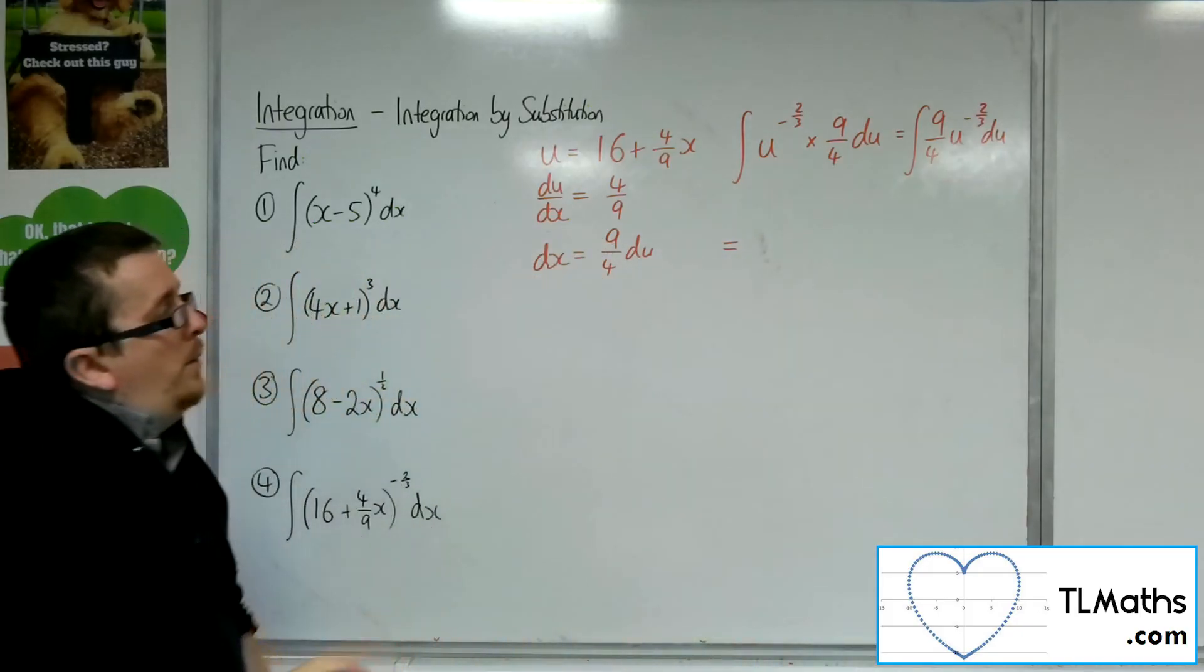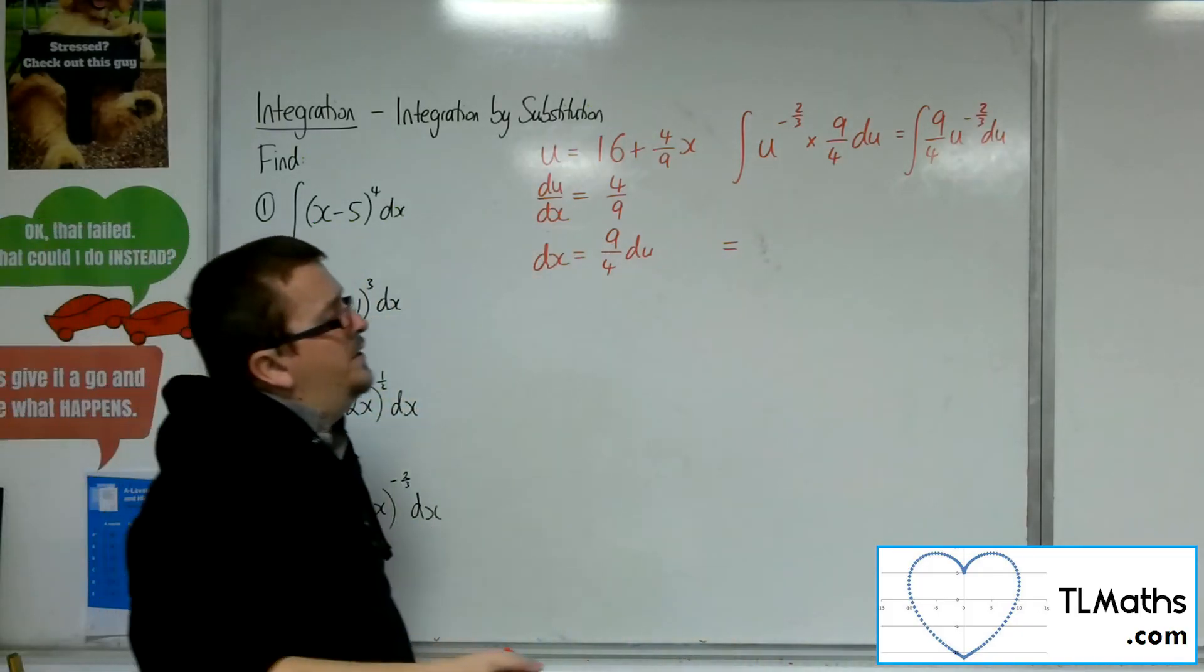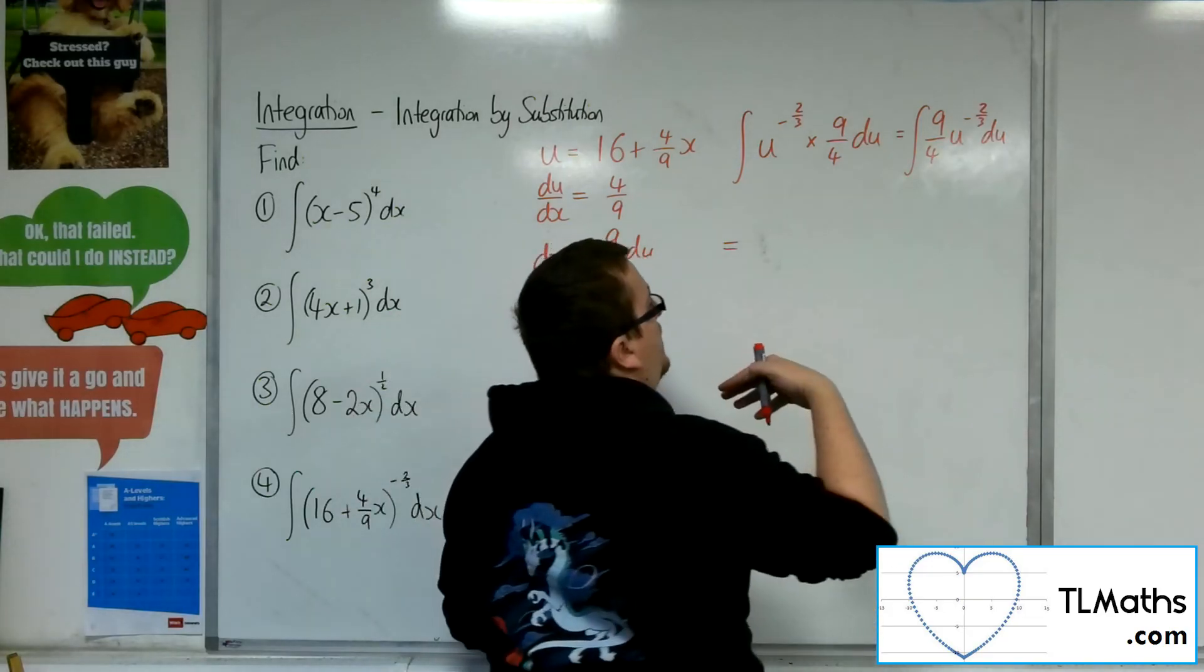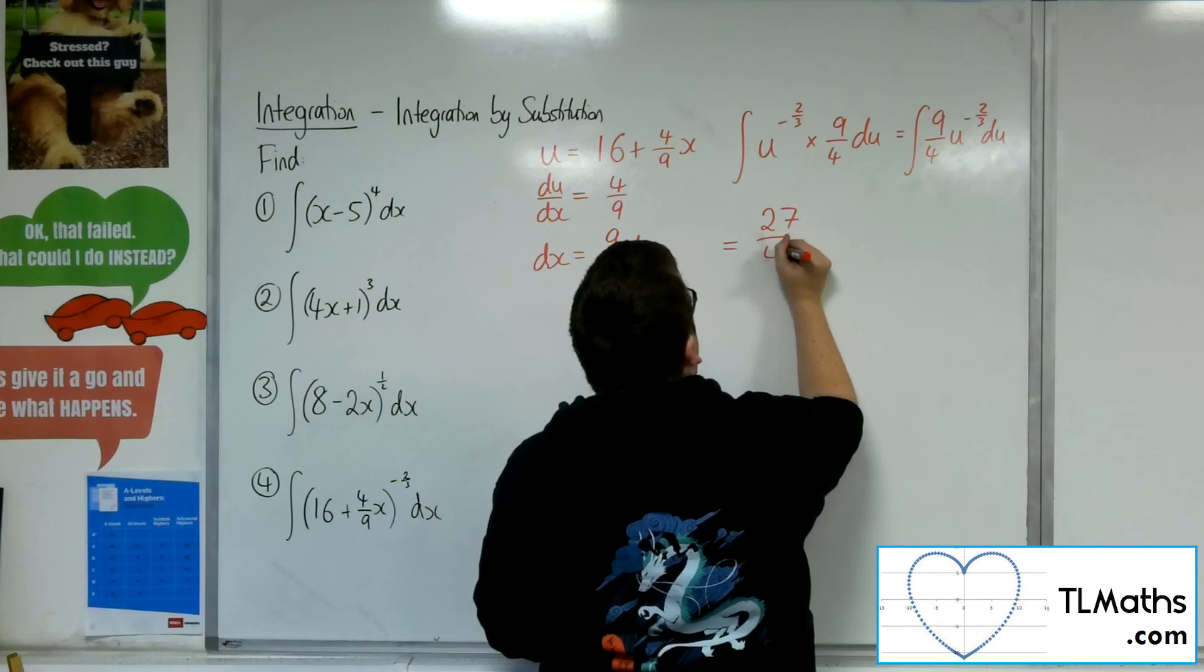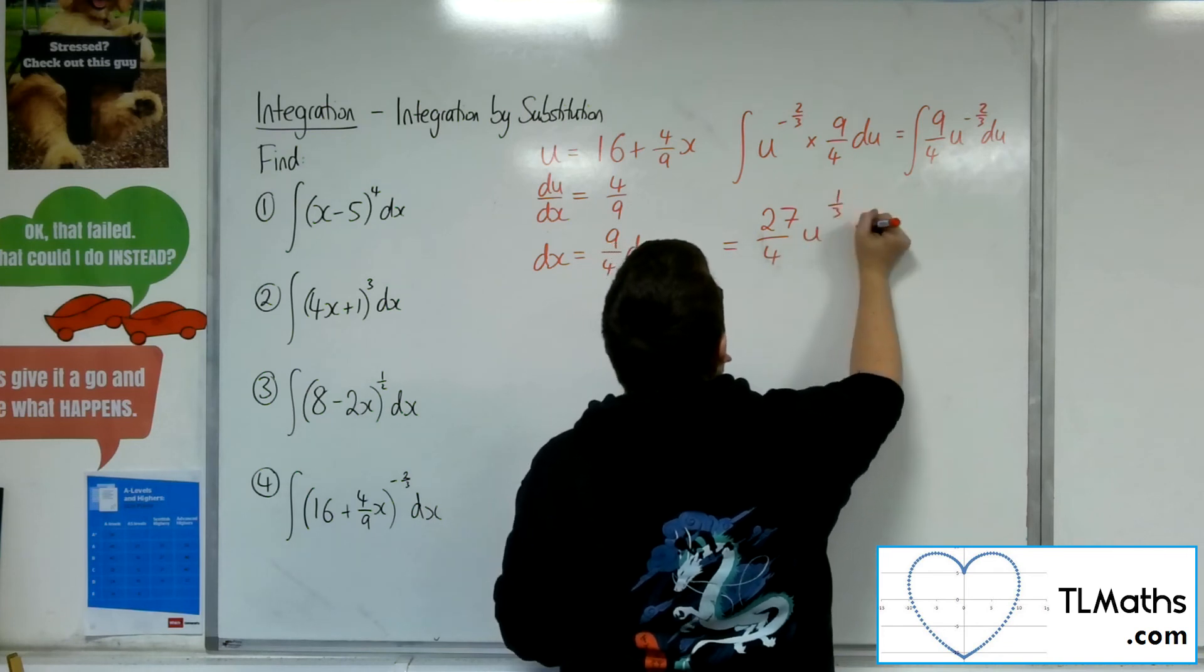Right. Now I want to add 1 to the power, which gets me to a third. Dividing by a third is multiplying by 3. So that would be 27 quarters u to the third plus c.